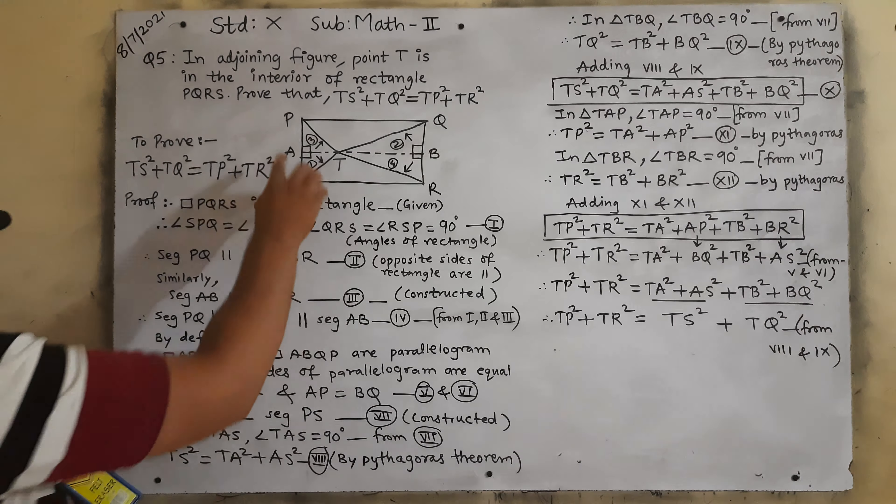Now we will use the second triangle TBQ. In triangle TBQ, angle TBQ = 90° because AB is perpendicular on segment RQ. So TQ is the hypotenuse — TQ² = TB² + BQ² by Pythagoras theorem. This is equation 9. Now we will add equation 8 and equation 9: TS² + TQ² = TA² + AS² + TB² + BQ². This is equation 10.